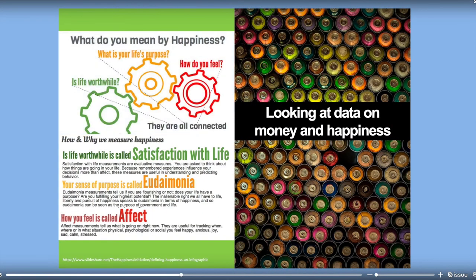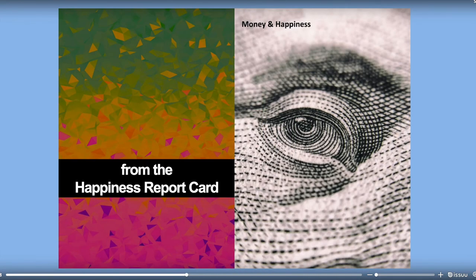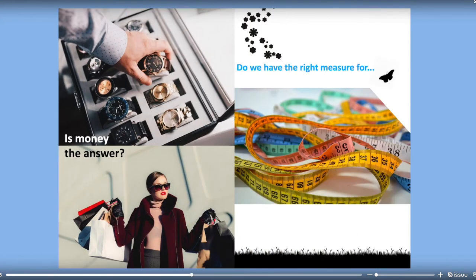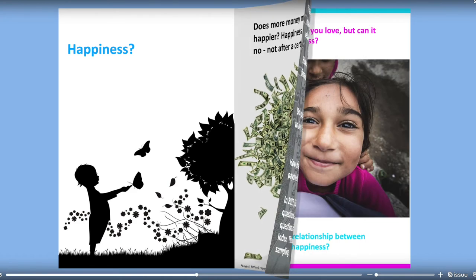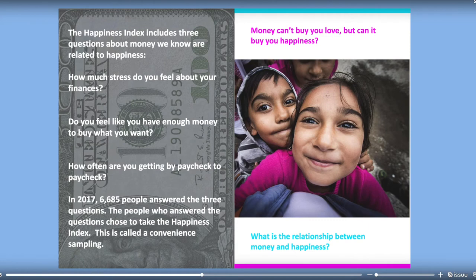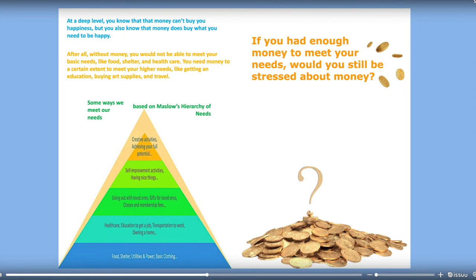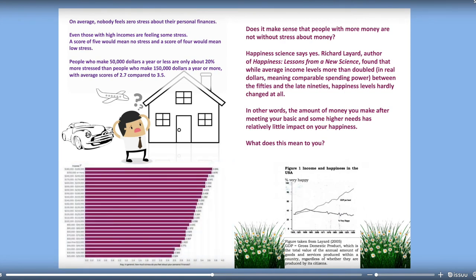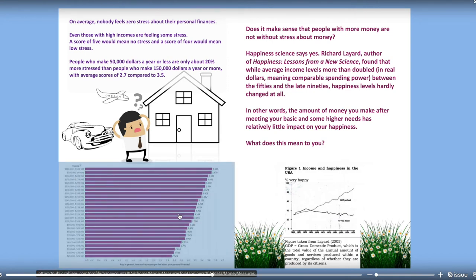Let's look more at data presentation. We're going to show you a report on money and happiness from one of the happiness report cards the Happiness Alliance has issued. It's presented to give people an idea about happiness and money. There are lots of strong visuals as well as questions and information introducing a paradigmatic shift from money-based to well-being-based thinking, and getting people to think about their own relationship between how much they make and their happiness and well-being. You also see some of the science — referencing Richard Layard's research on gross domestic product and happiness, backed up by Easterlin.